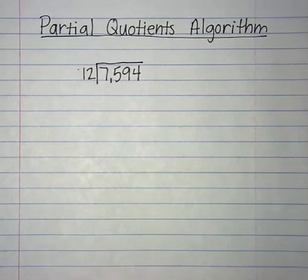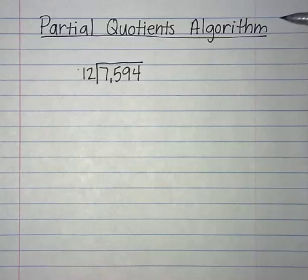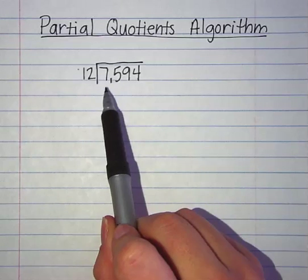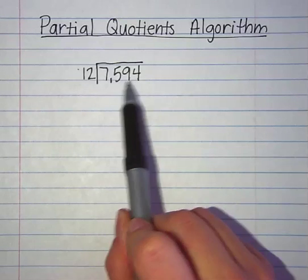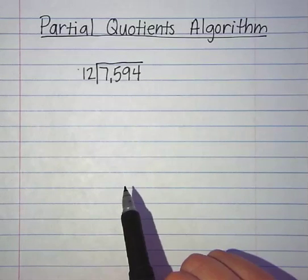Hi, today I'm going to show you how to do the partial quotients algorithm. The problem we're going to be working on today is 7,594 divided by 12.